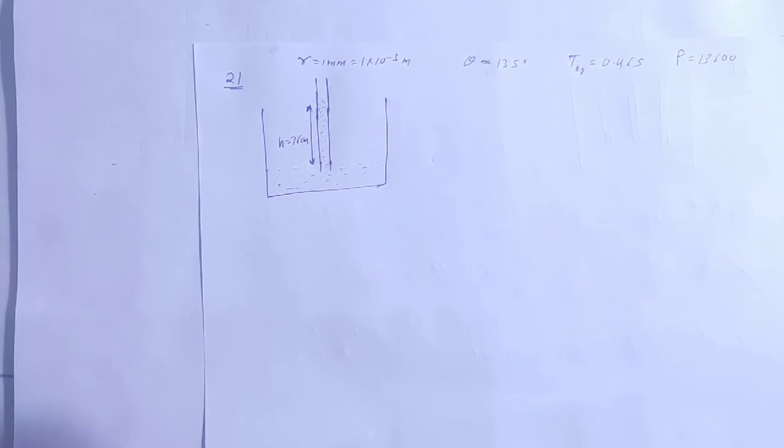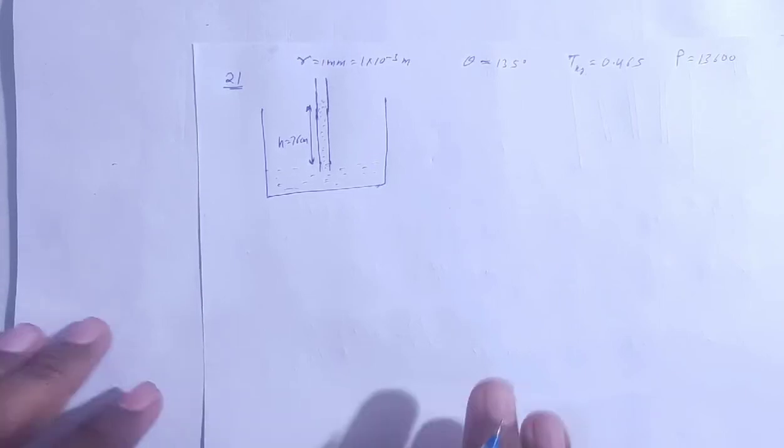The contact angle of mercury in the barometer tube is 135 degrees and the surface tension of the mercury is 0.465, and density is given 13600.